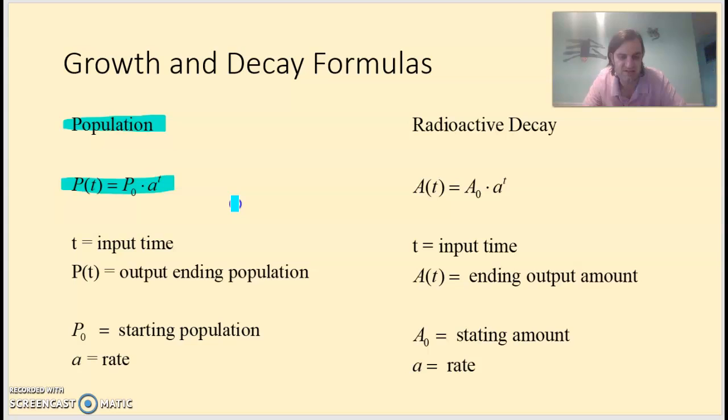So that's the ending amount. P sub 0 or P naught, the initial P value here, that's the starting population. And a is a rate. And that would usually be in decimal form if you're trying to think of something similar to a percent. But you don't have to think of a percent.